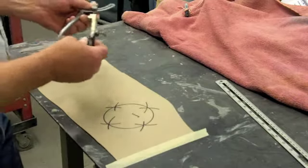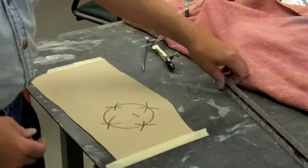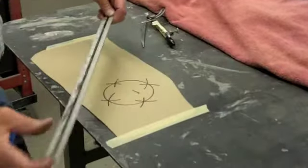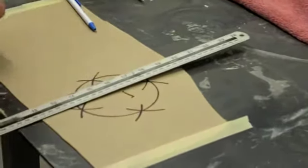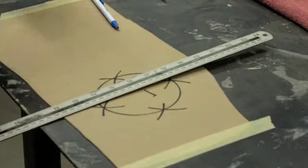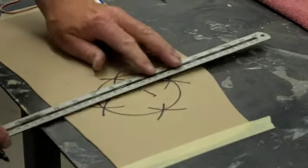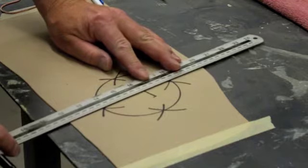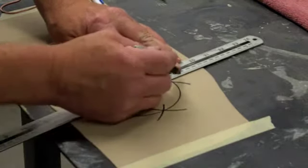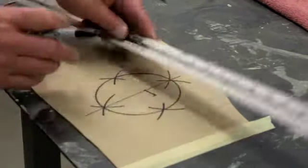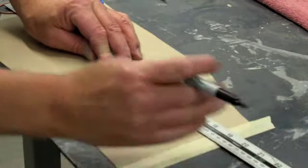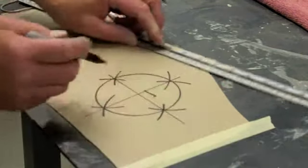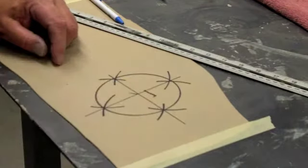After we've got those arcs taken care of, then we just take a straight edge like this, and with this straight edge, we'll go ahead and line up the places where they cross. And there's our center of our circle right there.